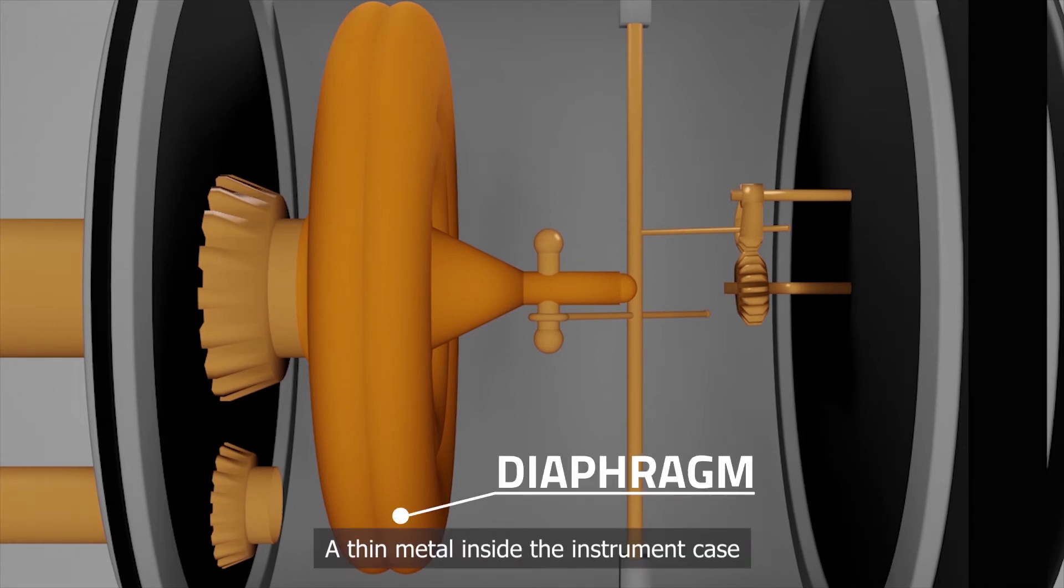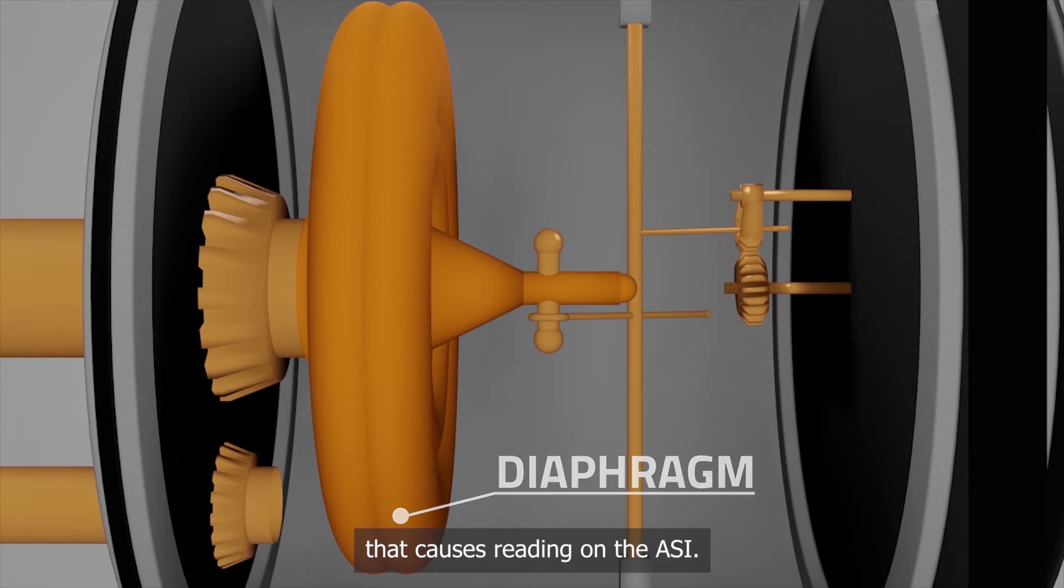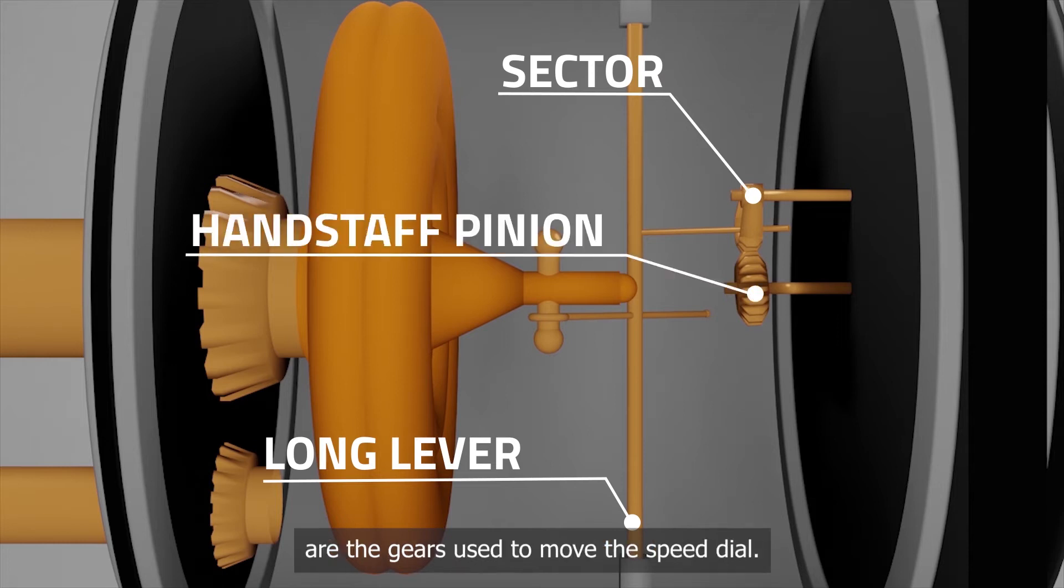Diaphragm. A thin metal inside the instrument case flexes as the pressure changes in dynamic pressure that causes readings on the ASI. Long lever, sector, and hand-step pinion are the gears that are used to move the speed dial.